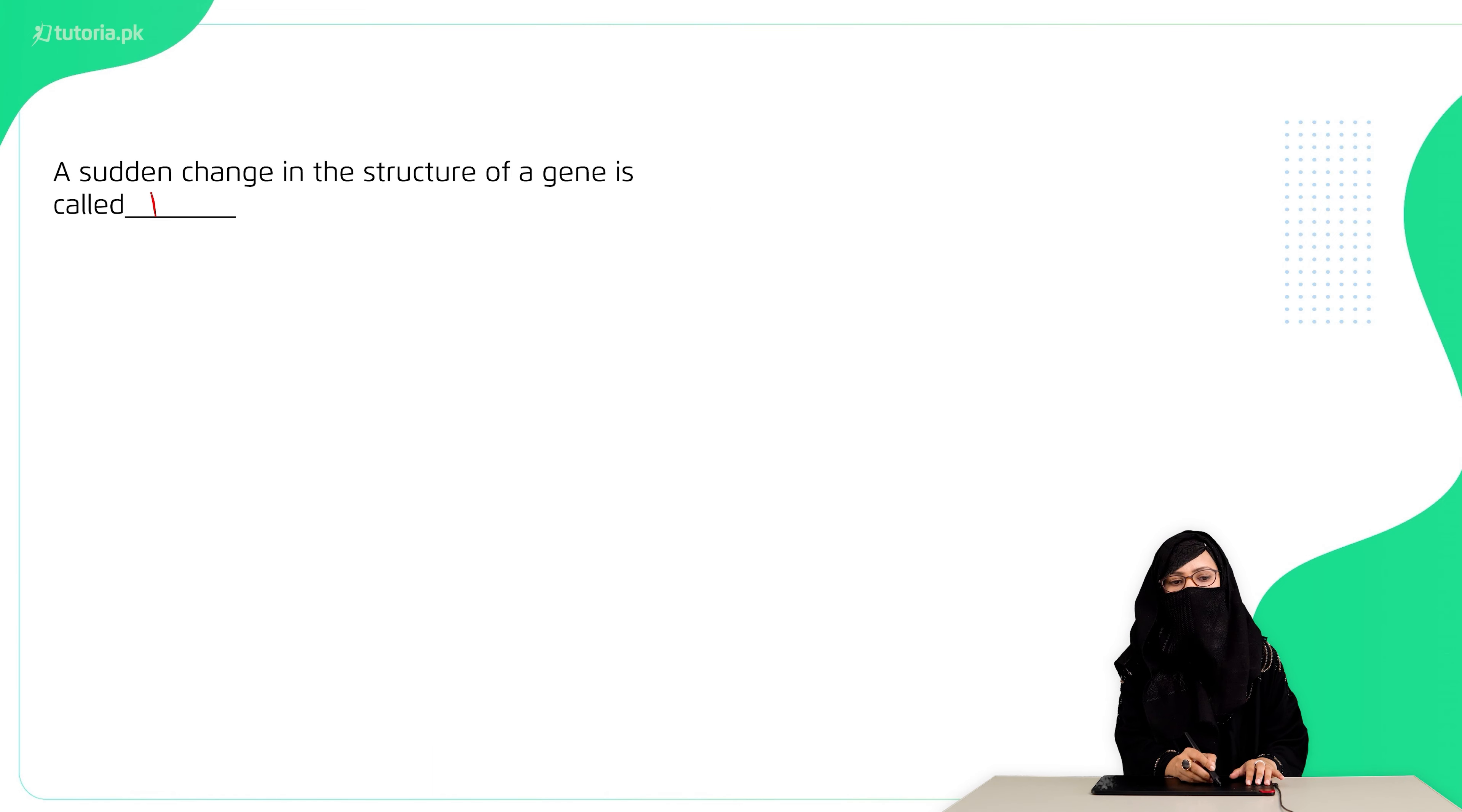Second, a sudden change in the structure of a gene is called mutation. Third, the chance of an event to occur is probability.